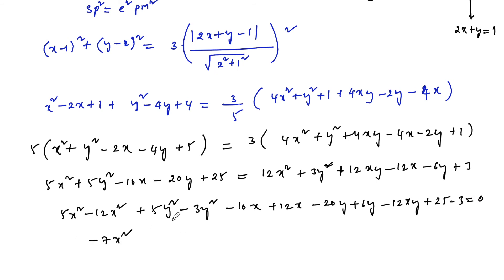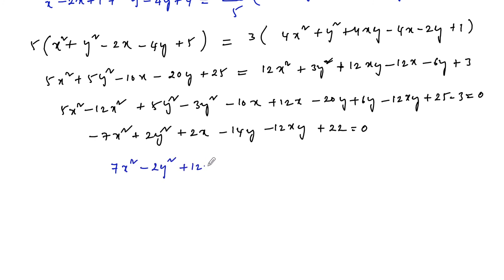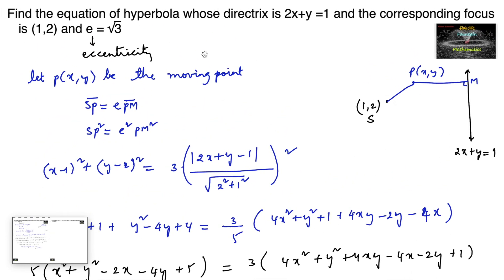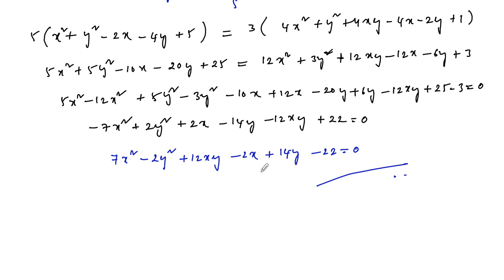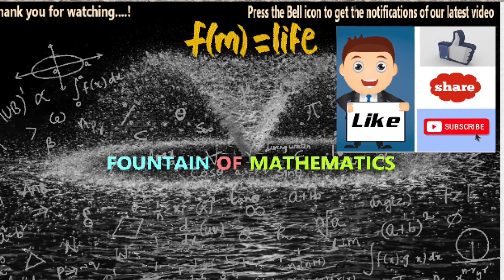Collecting terms: 5 minus 12 gives minus 7x square, 5 minus 3 gives plus 2y square, minus 10 plus 12 gives plus 2x, minus 20 plus 6 gives minus 14y, minus 12xy plus 22 equals 0. Changing signs, the equation is 7x square minus 2y square plus 12xy minus 2x plus 14y minus 22 equals 0. This is the equation of the hyperbola, since eccentricity root 3 is greater than 1. Please like, share, subscribe and support us. Thank you.